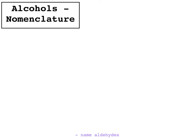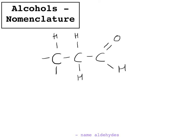Now I'm going to show how to name an aldehyde. Aldehydes are compounds with a CHO group on the end. With aldehydes, instead of having 'ol' on the end of the name like you do with alcohols, we have 'al' on the end. Basically, all you do is look at the longest carbon chain and put 'al' on the end. There are 1, 2, 3 carbons in the longest carbon chain, so this is propanal.